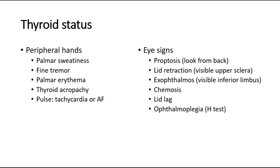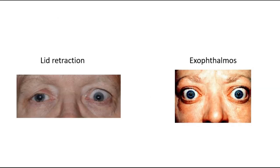Look at the eyes for eye signs such as proptosis, which is assessed by standing behind the patient and looking from above to see whether there is any bulging of the eyeballs. Also check for lid retraction where there is visible upper sclera, exophthalmos where there is visible inferior limbus, chemosis, lid lag, and ophthalmoplegia — which can be assessed by doing the H-test.